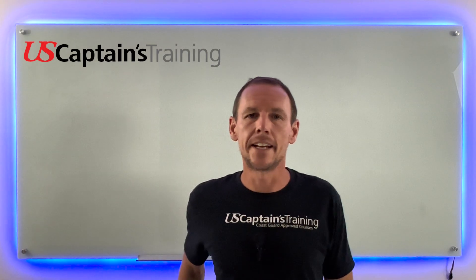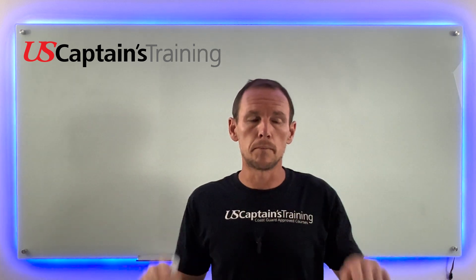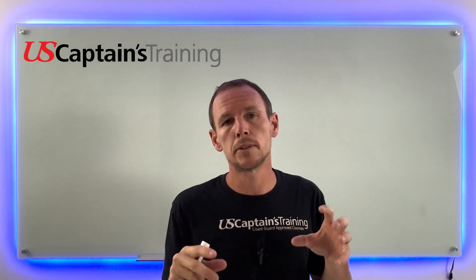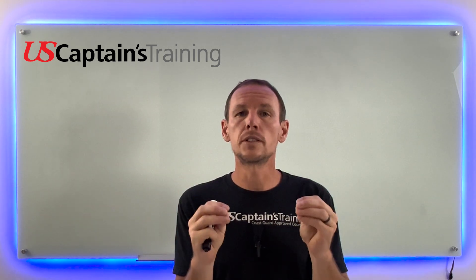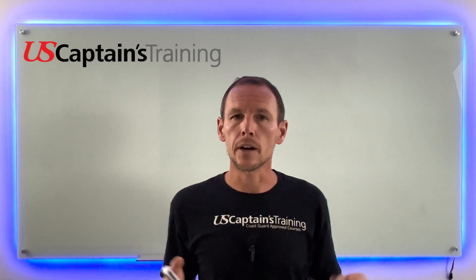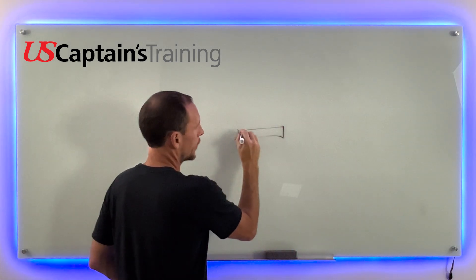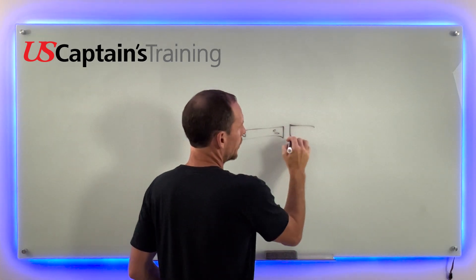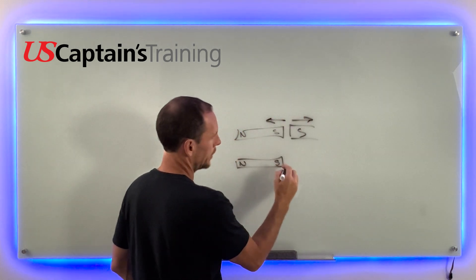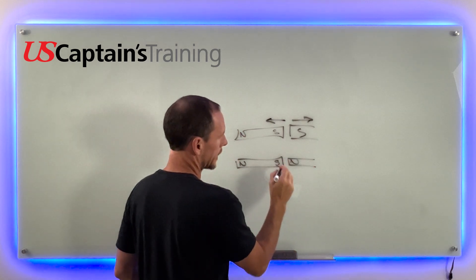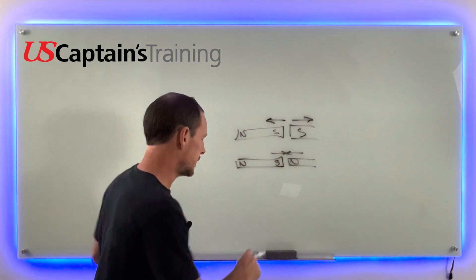Hey, Neil with US Captains Training again. Let's talk about our compass — the principles of our compass. The principles of our current compasses are very similar to those ancient mariners used. A compass is super simple, so it makes it reliable. How do they work? You have to understand a magnet a little bit. On a magnet you have a north and a south. If you put a south over a south, they will repel each other, but if you put a north and a south together, they will attract each other. Opposites attract, likes repel — that's the basics.